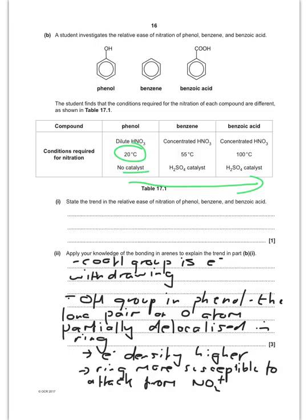Benzene is when you start having a catalyst. And you both need a catalyst for benzene and benzoic acid. However, benzene will react at 55 degrees C. Benzoic acid, you need to warp the temperature up to 100 degrees C. So, phenol is the easiest to nitrate and benzoic acid is the hardest.